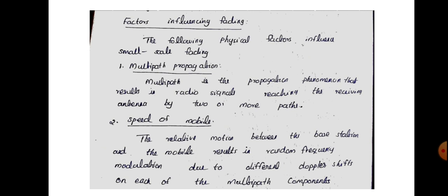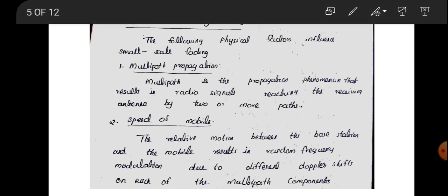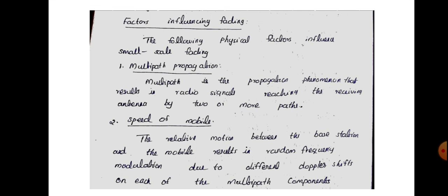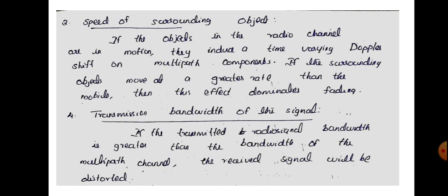The second factor that influences fading is the speed of the mobile. Sometimes the mobile may be moving; the relative motion between the base station and the mobile results in random frequency modulation due to different Doppler shifts on each of the multipath components. Whenever we are dealing with mobile communication, the receiver may be moving compared to the transmitter, causing Doppler shift and different frequency modulations on the received signals, which affects fading.